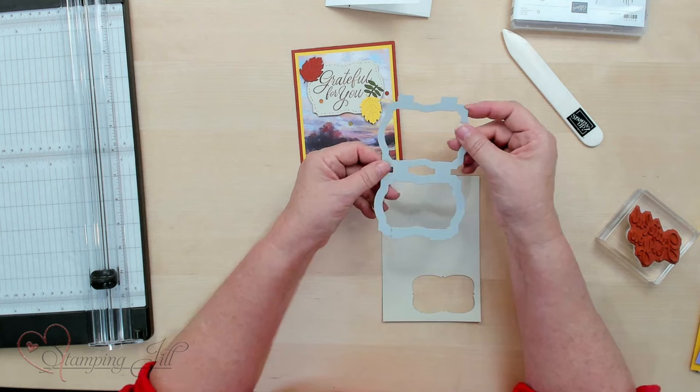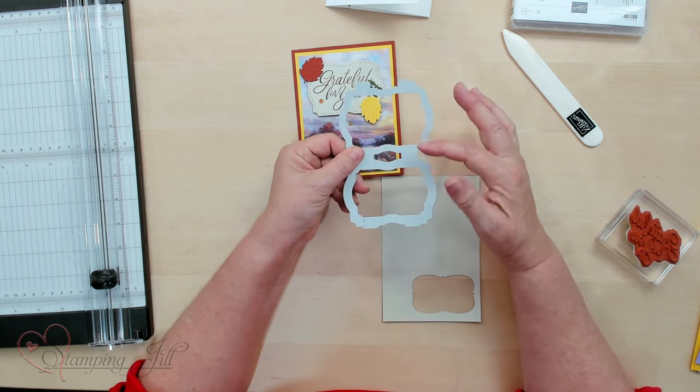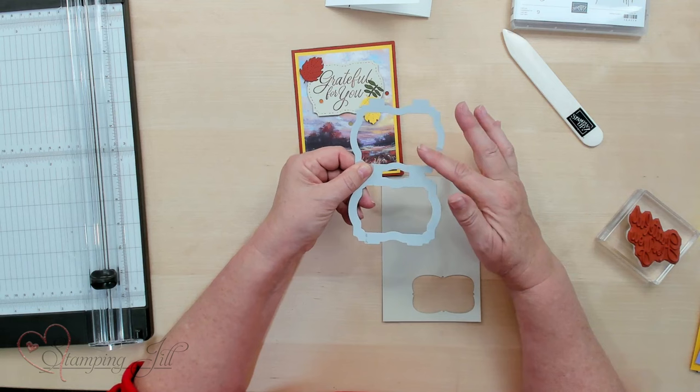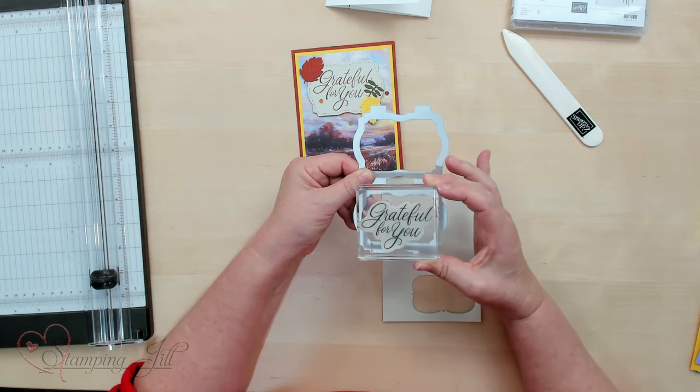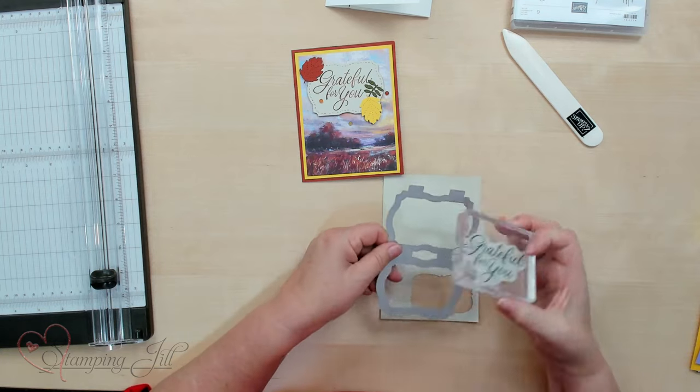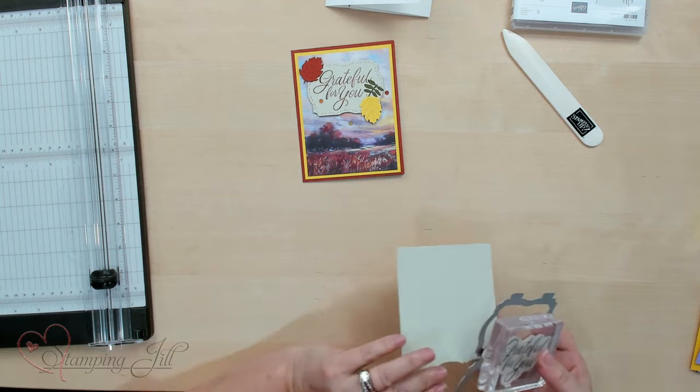If you notice with this die, there are two separate sizes. This is smaller and this is bigger. So you can decide what saying you want in this and which one will fit. I like to use the bigger one and that's what I used on this one. Let me go ahead and put one together.